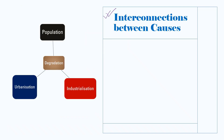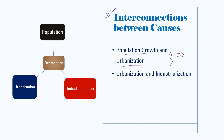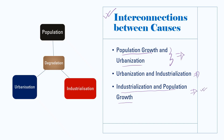As the population grows, there is an increased demand for jobs and better living conditions, which drives rural to urban migration. Urban areas become centers of industrial and economic activities. As cities grow, they attract industries that offer job opportunities and contribute to economic development. Industrialization can lead to economic growth and increased job opportunities, which can in turn result in higher birth rates and population growth. Improved healthcare and living conditions associated with industrialization can also lead to reduced mortality rates, contributing to population growth.